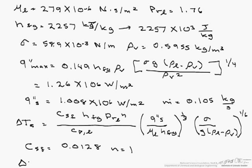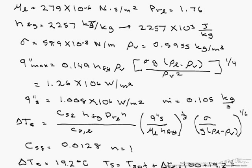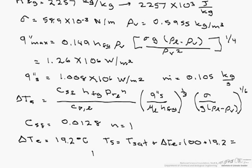When we calculate delta T_e, we get 19.2 degrees Celsius. Therefore, our surface temperature is T sat plus delta T_e, or 100 plus 19.2, which equals 119.2 degrees Celsius.